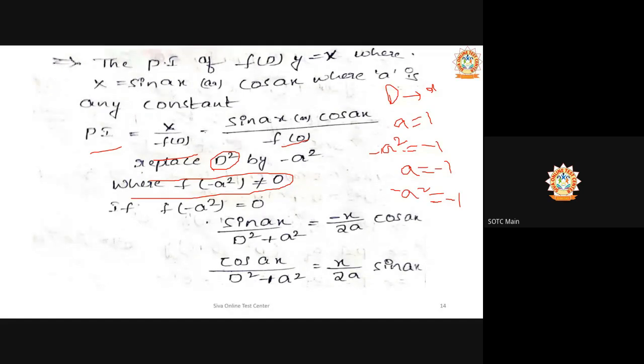If after substitution only a constant remains in the denominator, that's straightforward. But if D with a constant remains — like D+1 or D-1 or D+2 — then you need to rationalize. For example, if D+1 is there, multiply by (D-1)/(D-1), so the denominator becomes D²-1, a quadratic expression.